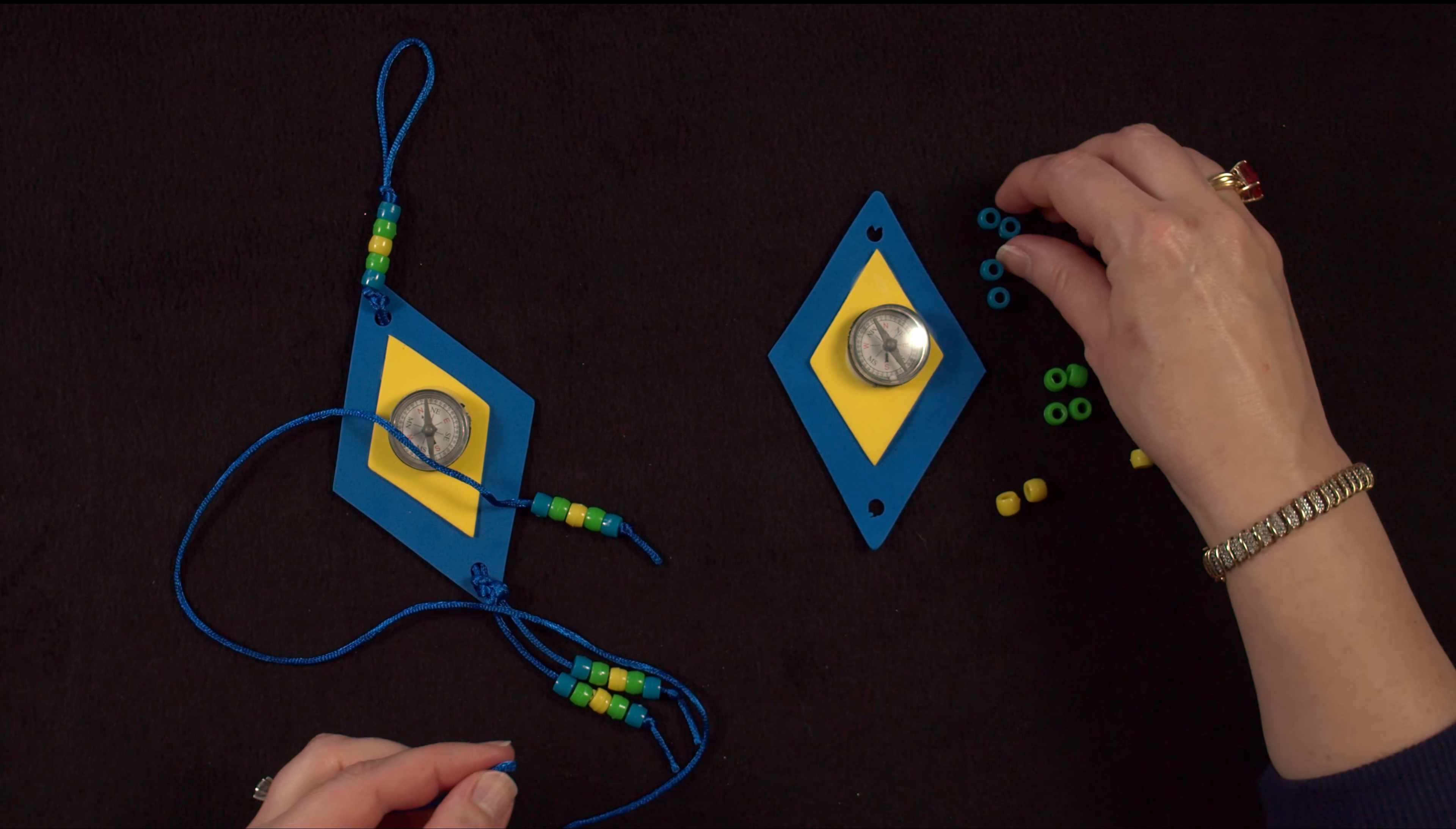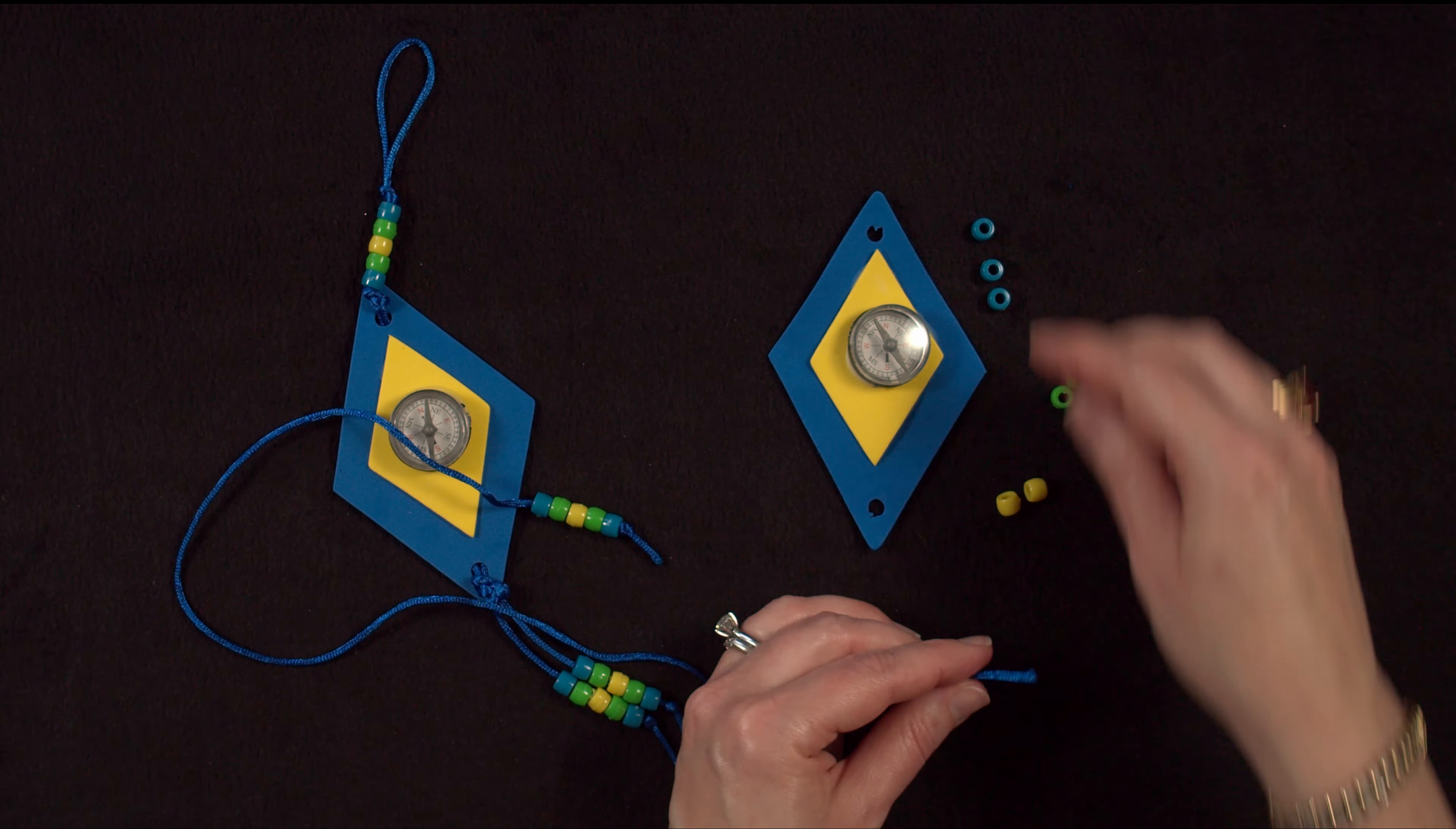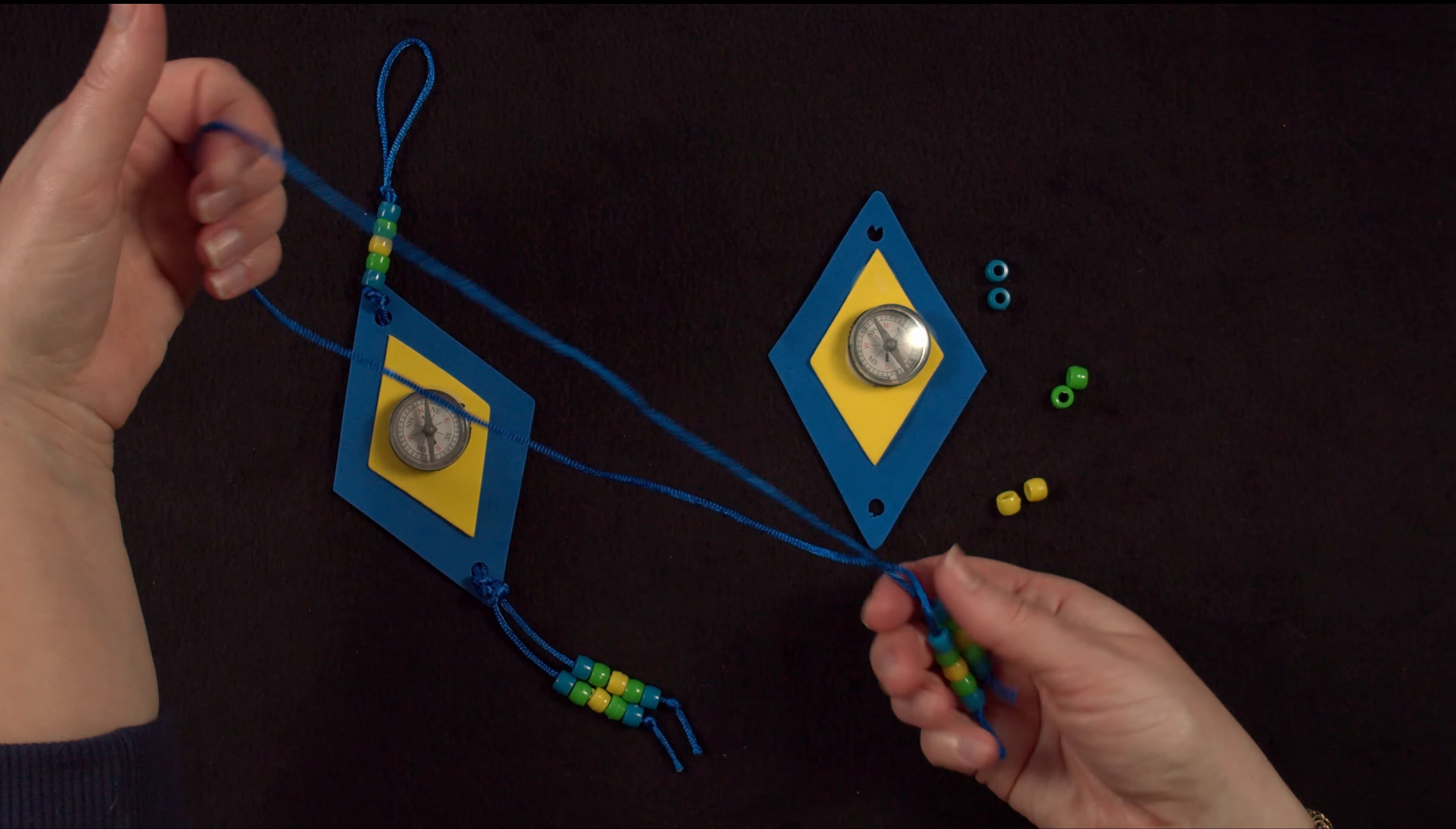And you're going to do the same thing following the same order on the other side of your cord. So blue, then green, then yellow, then green, and blue again. All right. So now we're going to do another tie on the other end of our cord.